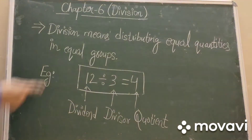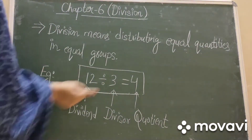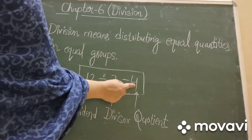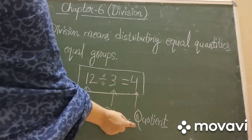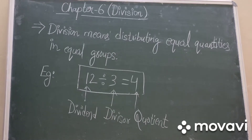And the final answer obtained after dividing is known as quotient. So in this equation, 12 is known as dividend, 3 is a divisor, and 4 is a quotient. And the number which remains after dividing is called remainder. We are going to discuss all these in detail in our next video.